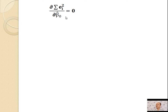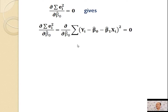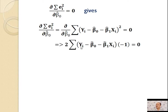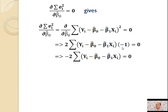Now, the partial derivative of Σeᵢ² with respect to β̂₀ equals the partial derivative of Σ(yᵢ − β̂₀ − β̂₁xᵢ)² with respect to β̂₀, set equal to 0. Applying the chain rule, the derivative of −β̂₀ with respect to β̂₀ is −1. After multiplying 2 by −1 we get −2, and taking the −2 to the right-hand side gives: Σ(yᵢ − β̂₀ − β̂₁xᵢ) = 0.